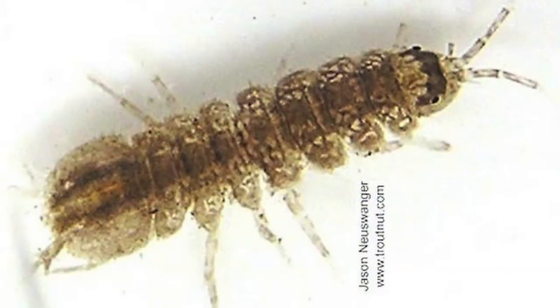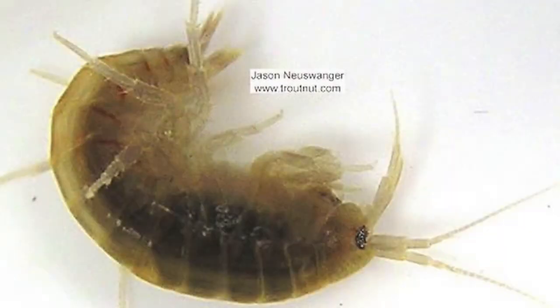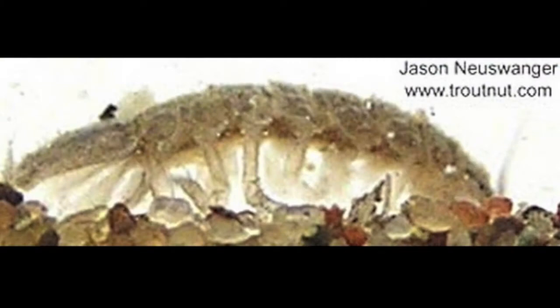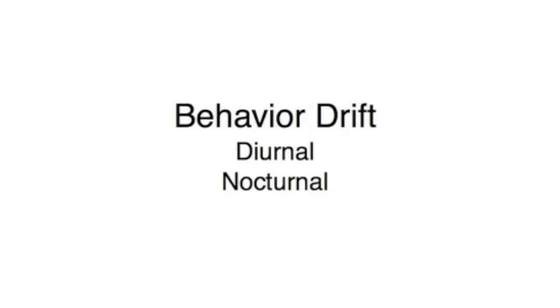So what are sowbugs and scuds? Both are crustacea. This is a sowbug, which is also known as a cress bug. This is also a sowbug. This is a scud. Note that both have a segmented hard back shell and numerous jointed legs. There are similarities and differences between the two organisms. Morphologically, sowbugs tend to be flattened vertically, while scuds tend to be flattened from side to side. While sowbugs and scuds are present in great numbers in behavioral drift — a topic we'll discuss in future videos — almost never are trout feeding selectively on sowbugs or scuds.